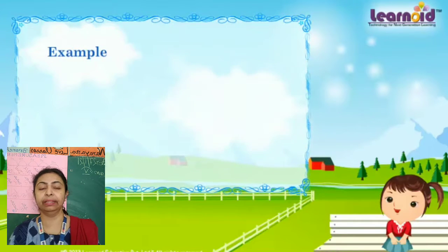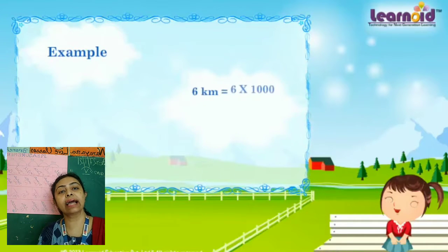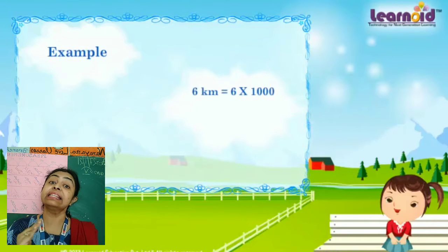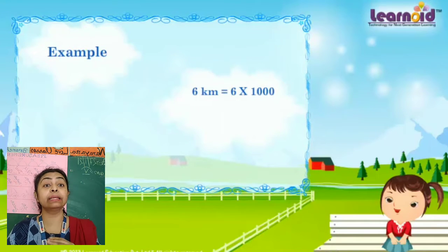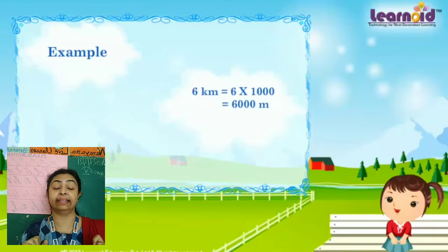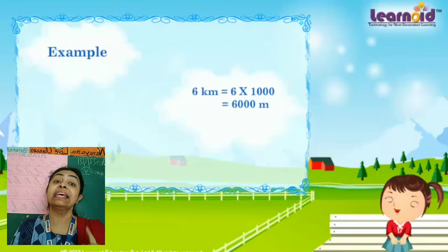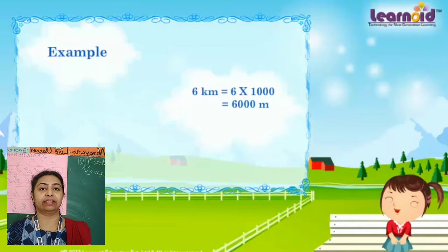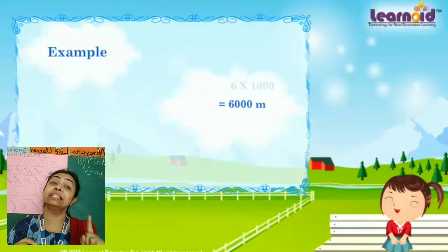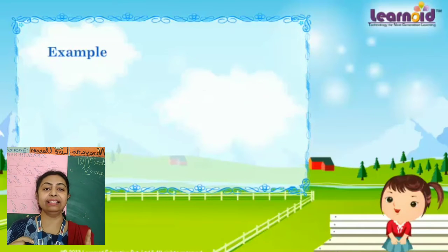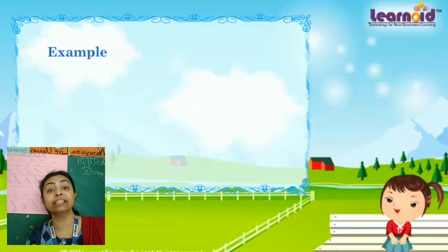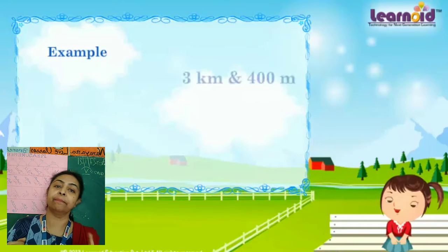For example: 6 kilometers. 6 kilometers is 6 multiplied by 1000, which means 6000 meters. So 6 kilometers equals 6000 meters. That is how we convert kilometers to meters.